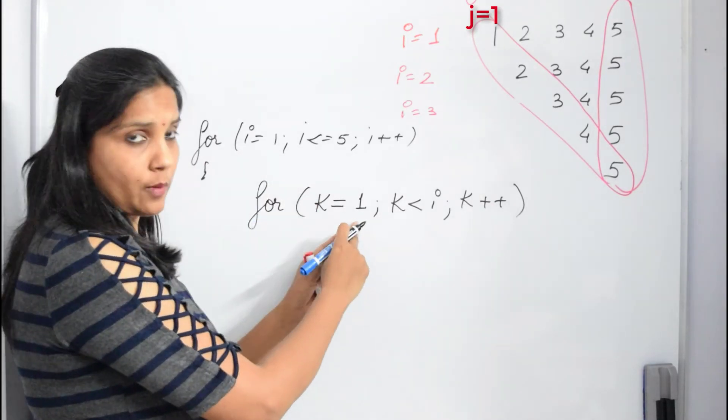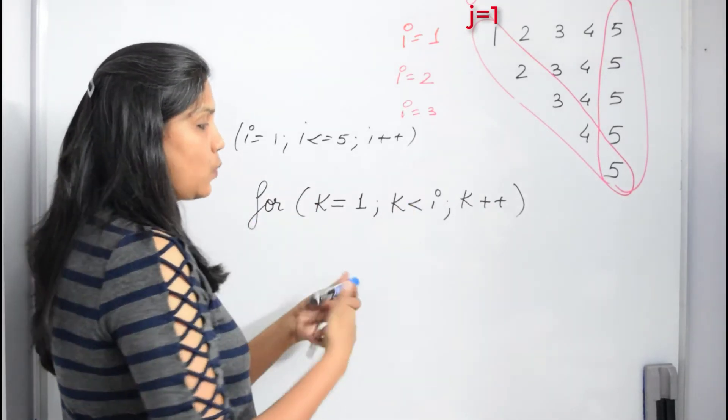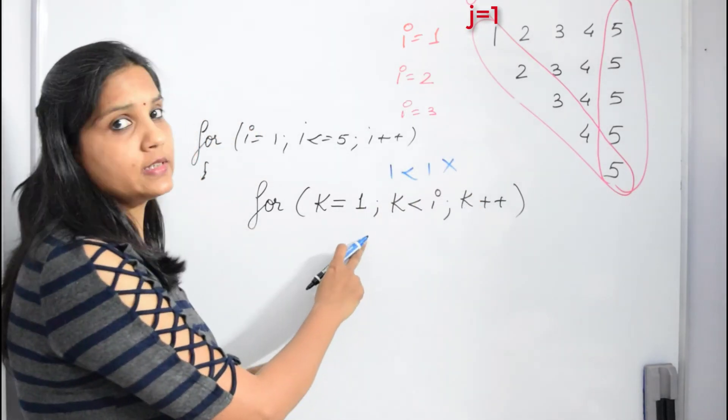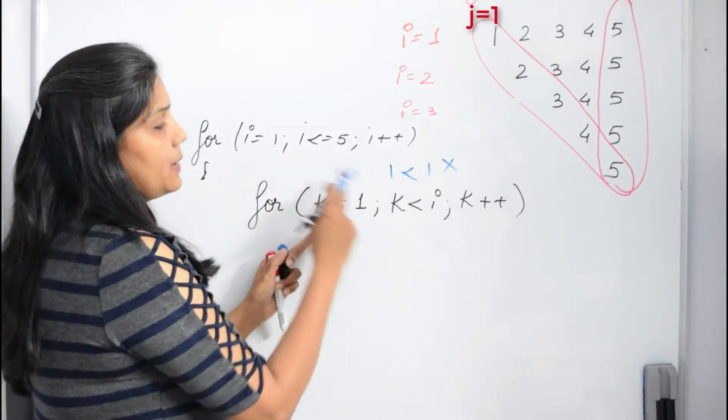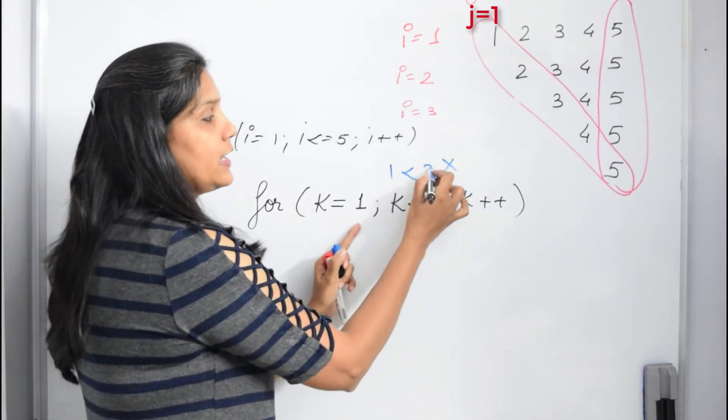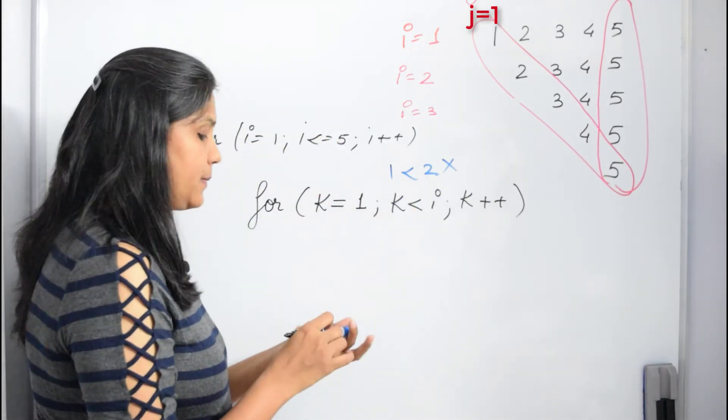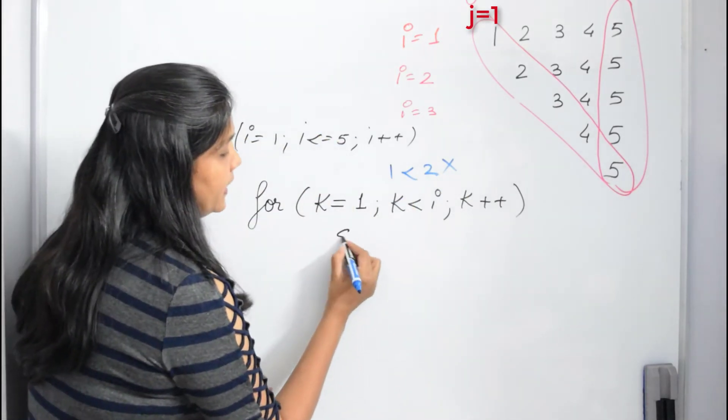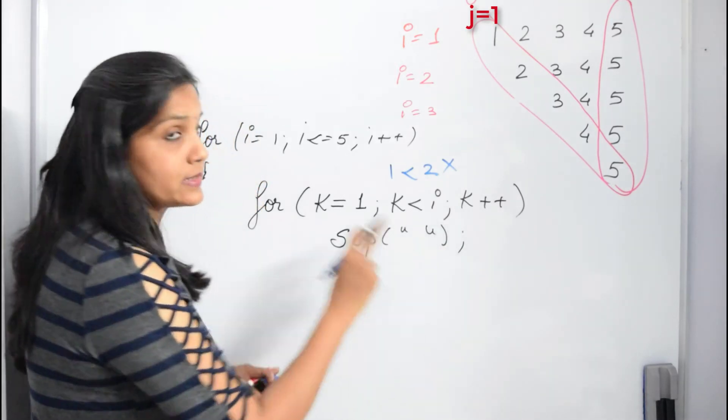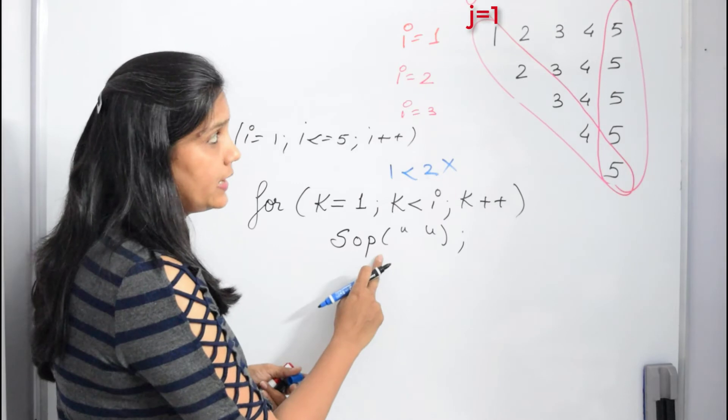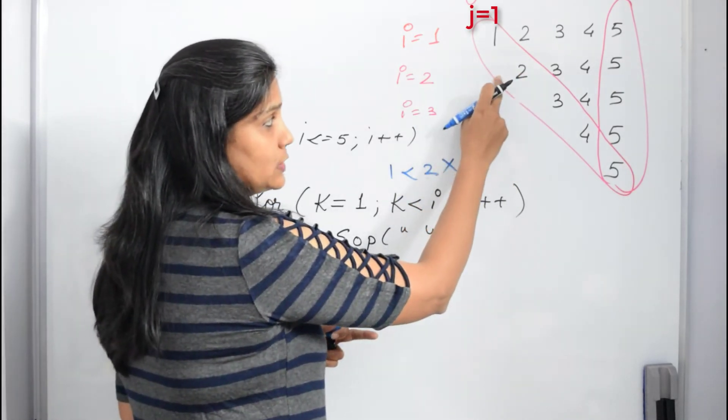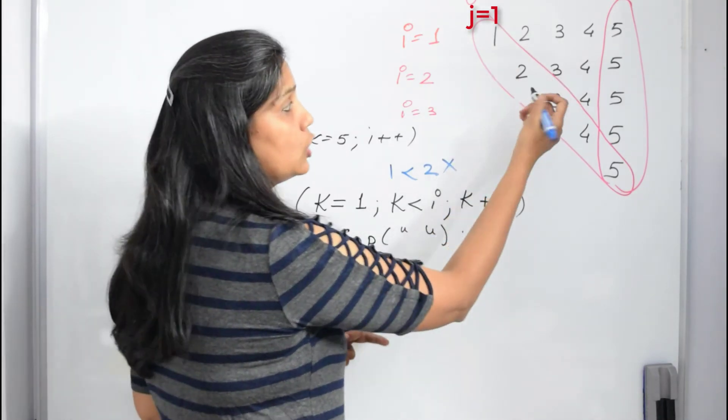Now what's happening? When i is 1, k is starting from 1. 1 less than 1, so definitely 1 less than 1 is going to be false—it doesn't go inside the loop. When my i becomes 2, k again starts from 1. 1 less than 2 is true, it prints space 1 time. So when you want to print a space, you'll just say sop and just write printing a space. Remember you will not have ln because you don't want to print a space and then come on next line.